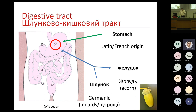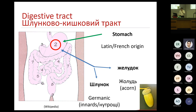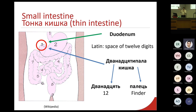Moving on to the next part — the stomach. In Ukrainian, there are two words for this. The first is 'zherudok,' which comes from the word 'zholud,' meaning an acorn — which in a way describes the form of the stomach. The other word is 'shlunuk,' which is actually a Germanic word for the innards. Now it starts to make even more sense in Ukrainian and even less sense in English. So after the stomach, we move to the small intestine, or the 'tonka kishka' — the thin intestine in Ukrainian.